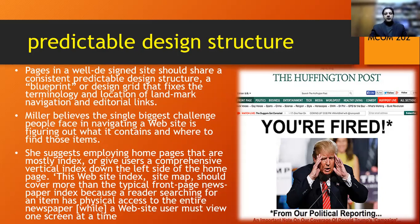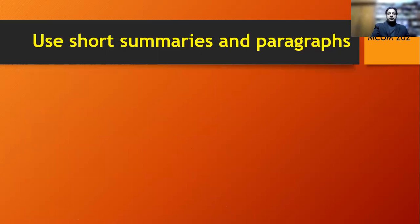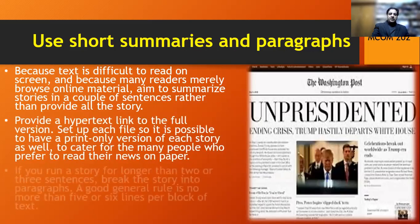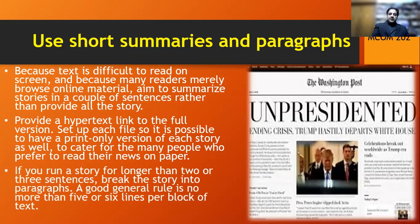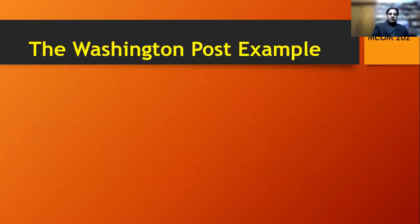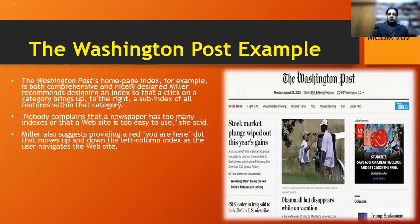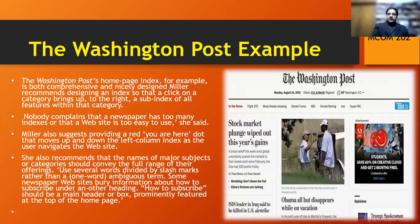Pages in a well-designed site should share a consistent, predictable design structure — a blueprint or design grid that fixes the terminology and location of landmark navigation and editorial links. Miller believes the single biggest challenge people face in navigating a website is figuring out what it contains and where to find things. She suggests employing home pages that give users a comprehensive vertical index down the left side. This site map should cover more than a typical front-page newspaper index, because when using a website you do not have physical access to the entire publication. Use short summaries and paragraphs — they save readers' time and give a good idea of what the story is about.